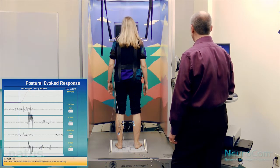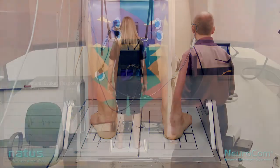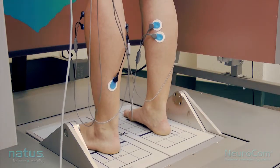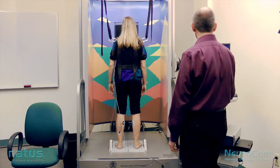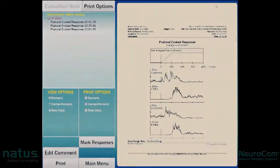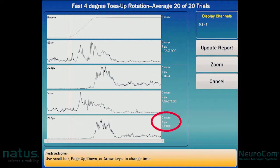The test runs 20 trials. This is data analysis for the Postural Evoked Response Test. From the comprehensive screen, click on 'mark responses,' which will show you averages of platform rotation, left gastroc, left tibialis, right gastroc, and right tibialis over the 20 trials.